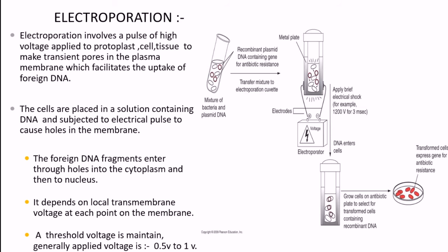In a cuvette, there is a mixture of bacteria and recombinant DNA or plasmid DNA. A metal plate holds the solution and a specific voltage is applied for a specific period of time. The factors affecting gene transfer are voltage and time, which play very important roles.